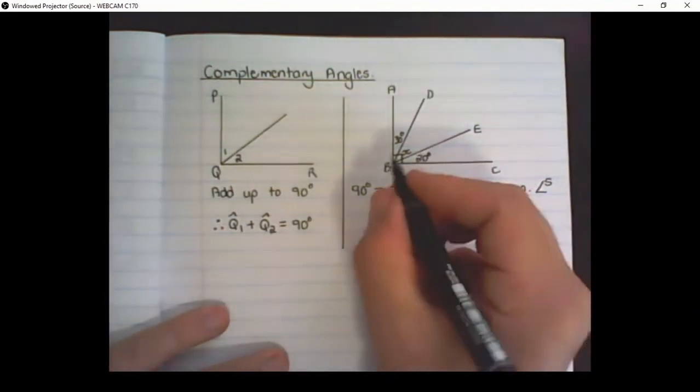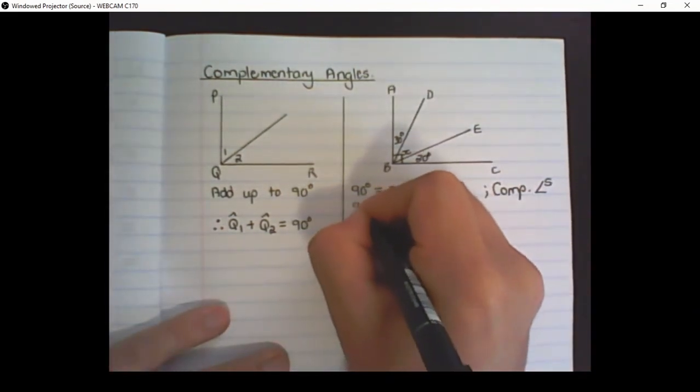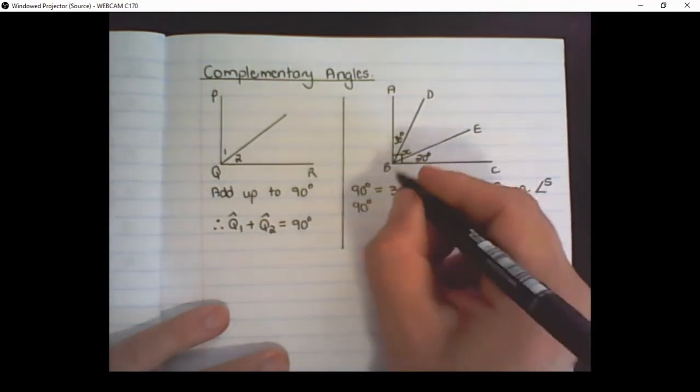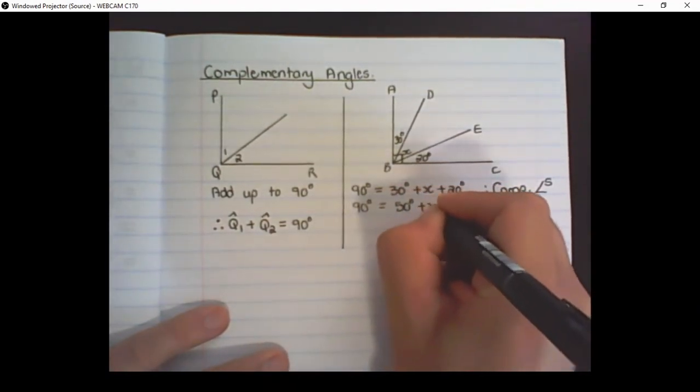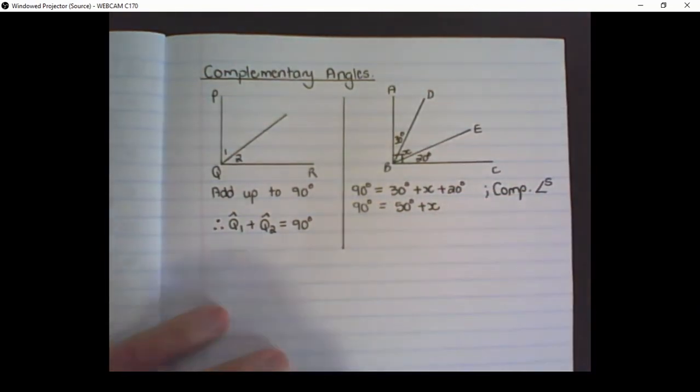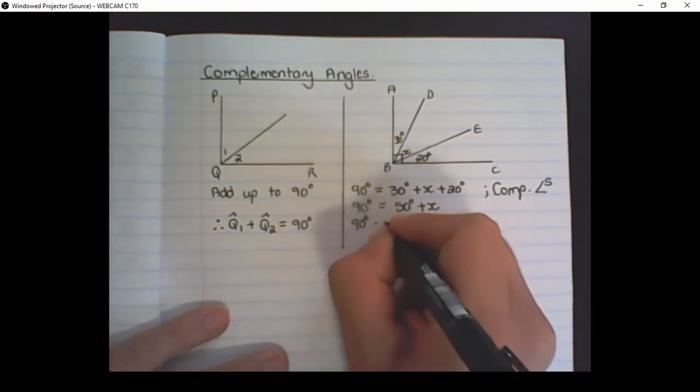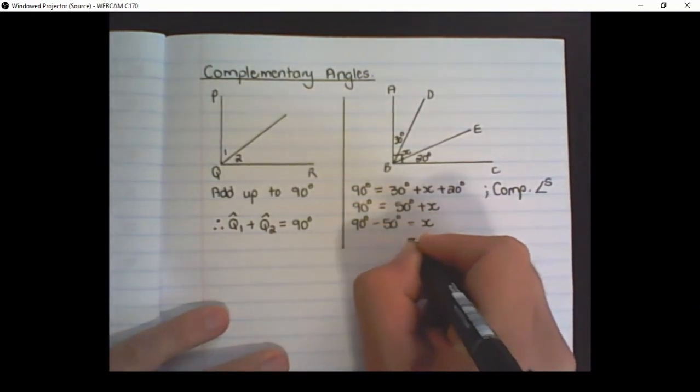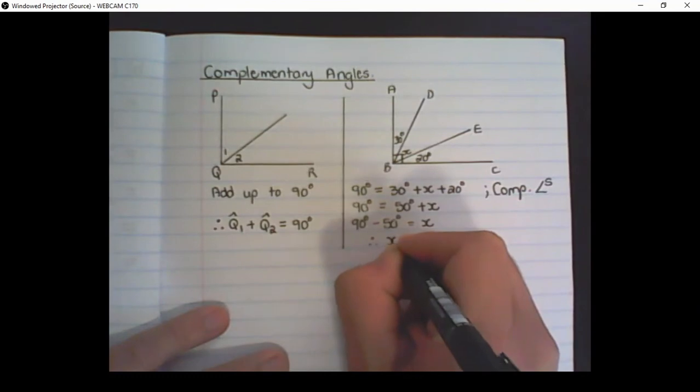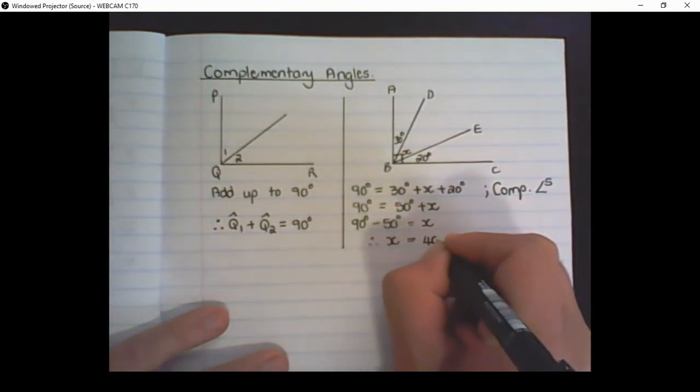Now I can simplify this. I add up the like terms. I move all the values over to the one side to get X alone. Therefore, X is equal to 40 degrees.